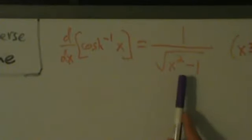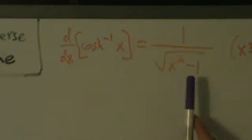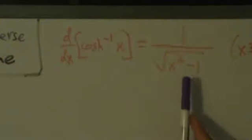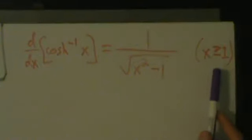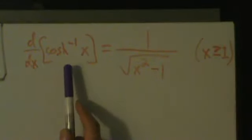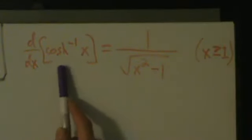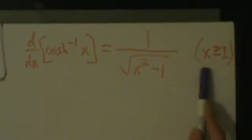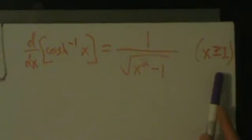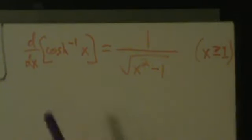For the inverse hyperbolic cosine, the derivative is going to have the minus 1 in there. Also, we have this restriction that x is bigger than or equal to 1. But this restriction actually just comes from the definition of the inverse hyperbolic cosine — it's not really a calculus thing. This restriction is just from the definition of this function.